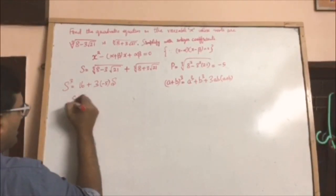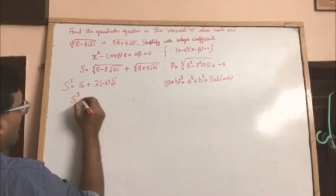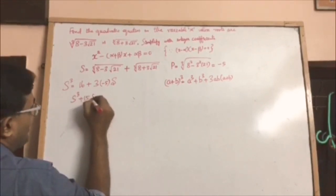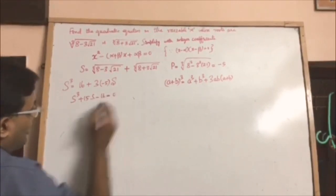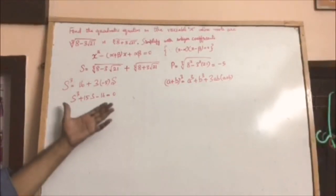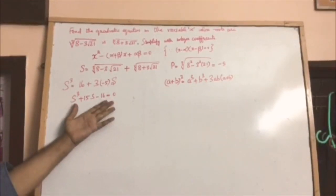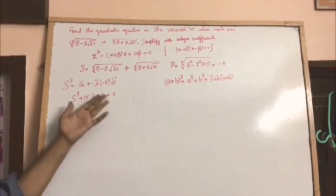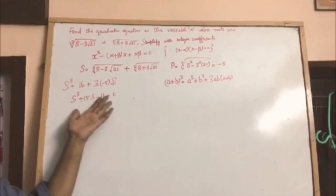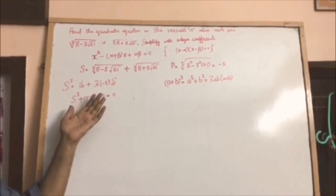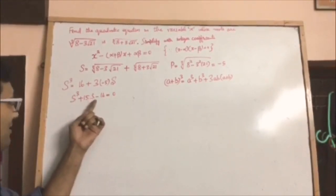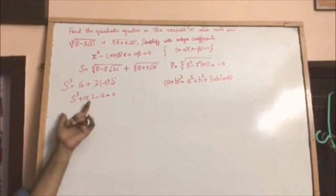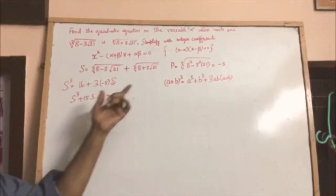In other words, s cubed plus 15s minus 16 equals 0. Now s equals 1 directly satisfies this equation — we can simply observe: 1 cubed plus 15 times 1 minus 16 equals 16 minus 16, which is 0.